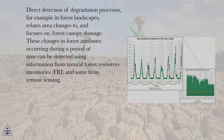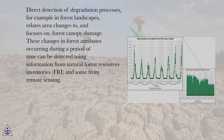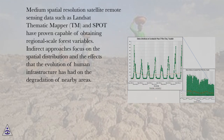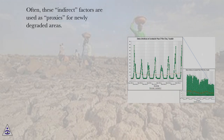Direct detection of degradation processes, for example in forest landscapes, relates area changes to and focuses on forest canopy damage. These changes in forest attributes occurring during a period of time can be detected using information from Natural Forest Resources Inventories (FRI) and some from remote sensing. Medium spatial resolution satellite remote sensing data such as Landsat Thematic Mapper (TM) and SPOT have proven capable of obtaining regional scale forest variables. Indirect approaches focus on the spatial distribution and the effects that the evolution of human infrastructure has had on the degradation of nearby areas. Often, these indirect factors are used as proxies for newly degraded areas.